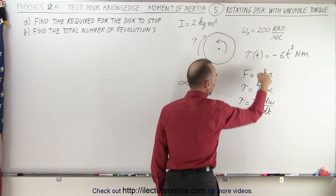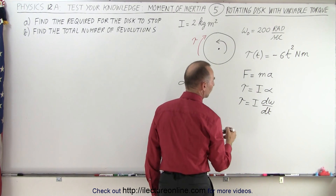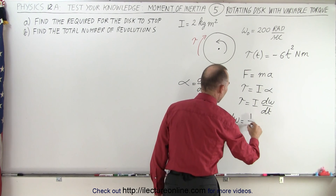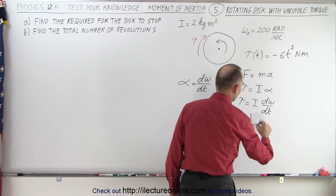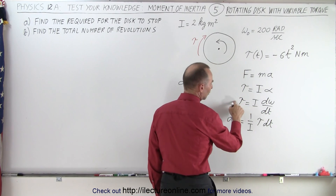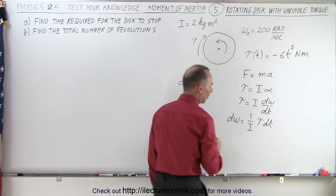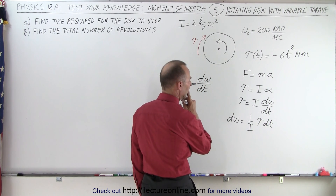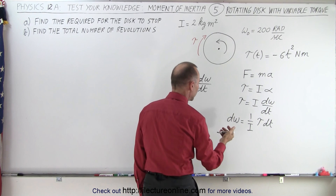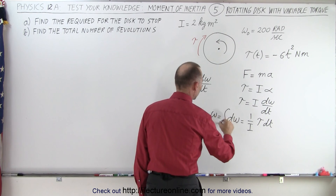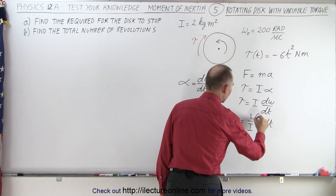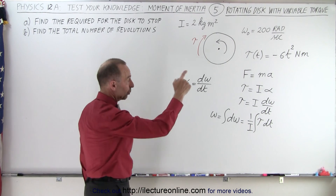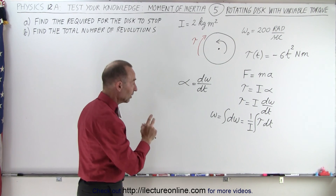Notice that the torque is a function of time, so we bring dt over to the right side and solve for dω. So dω is equal to 1 over I times the torque times dt. Now we have an equation that gives omega as a function of time. To find omega, we integrate both sides: omega equals the integral of (1/I) times tau dt, which is the integral of (1/I) times the torque dt. We can now plug in the expression for torque to find omega in terms of time.